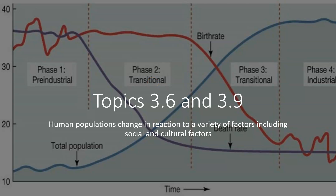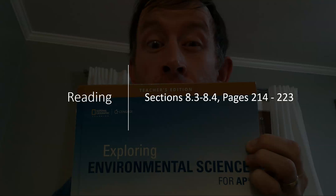Greetings, everybody. We're going to do our final installment for Unit 3 and discuss topics 3.6 and 3.9, with the enduring understanding that human populations change in reaction to a variety of factors, including many of those we talked about in reference to populations within natural ecosystems. But we also have social and cultural factors to consider for a human population. Read sections 8.3 and 8.4, pages 214 through 223 — that is the rest of chapter 8. Do follow up with your Miller textbook and get that reading done to accompany these notes.